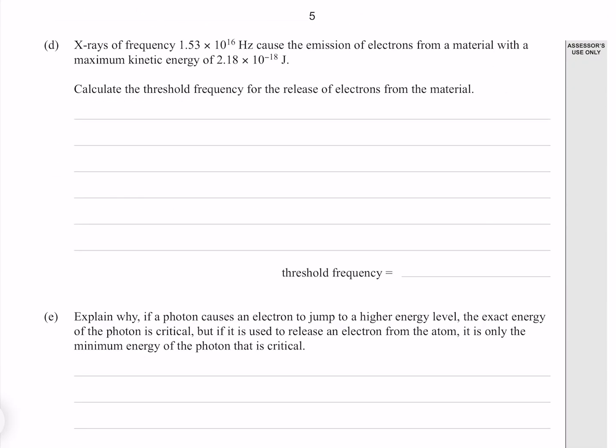X-rays of frequency 1.53 times 10 to the 16 hertz cause the emission of electrons from a material with a maximum kinetic energy of 2.18 times 10 to the minus 18 joules. Calculate the threshold frequency for the release of electrons from the material. We know that our photon energy, given by HF, where this is our F, is spent on our work function, the energy required to liberate the electrons.